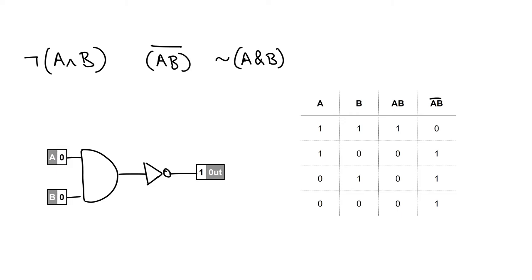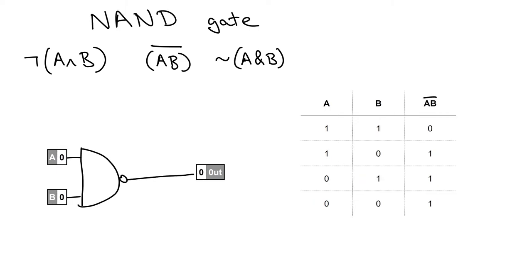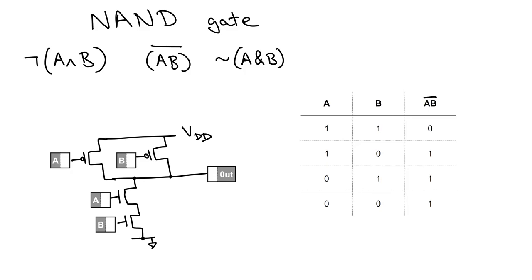A NAND gate is an AND gate with an inverted output, and it has its own gate symbol — like an AND gate with a little inversion circle at the end. Once again, you see that circle, think inversion. We can also implement this directly in MOSFETs: if A and B are both 1, connect to ground via two NMOSFETs in series; if either A or B is 0, connect to VDD via two PMOSFETs in parallel. So we can implement this directly as a logic gate, though in equations it ends up being written as NOT-A-AND-B.